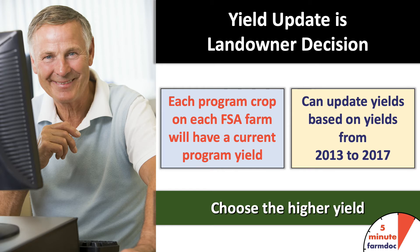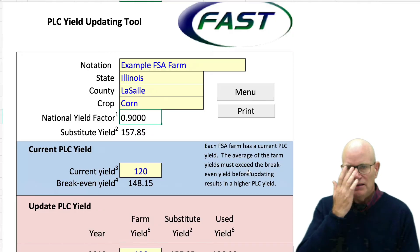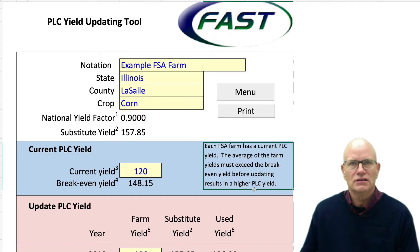We have developed an Excel tool, the PLC yield updating tool, which is available with our 2018 Farm Bill tool. Go to the FAST section of FarmDoc to download it.